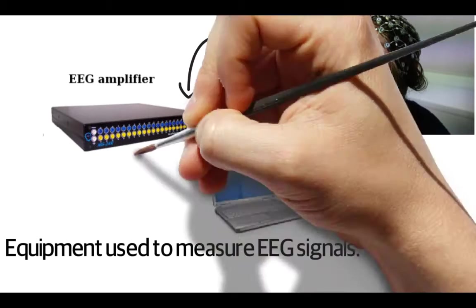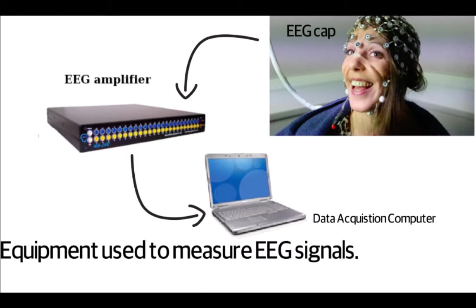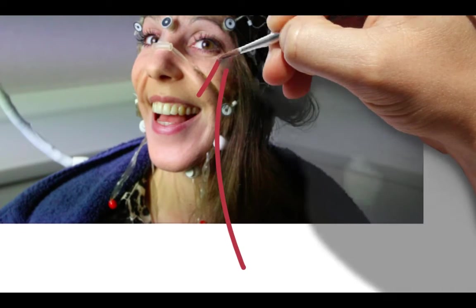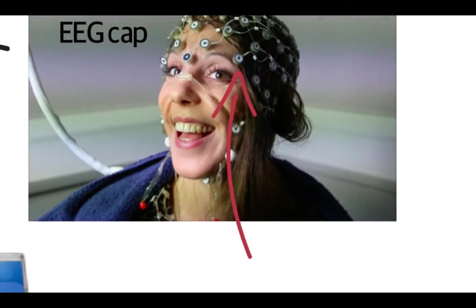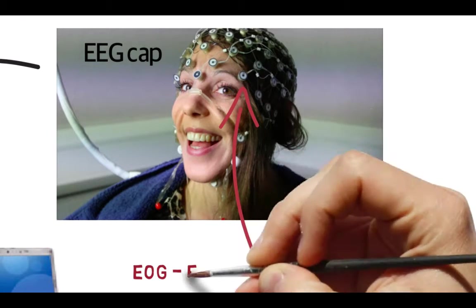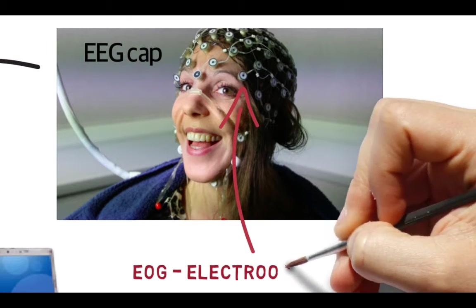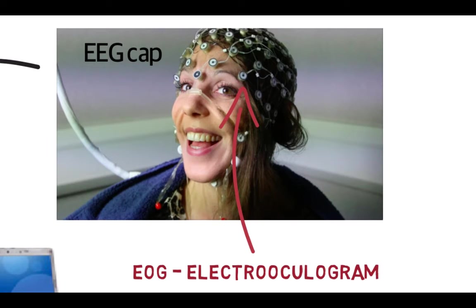The data then gets sent to a data acquisition computer to be stored and analyzed. Each EEG cap has special electrodes to measure the eye muscle movement. This is called EOG, or electrooculogram.